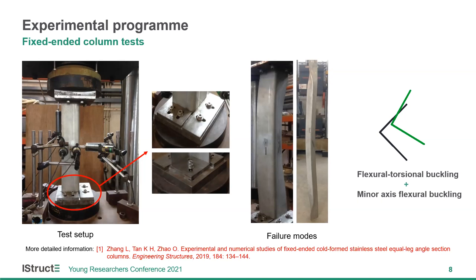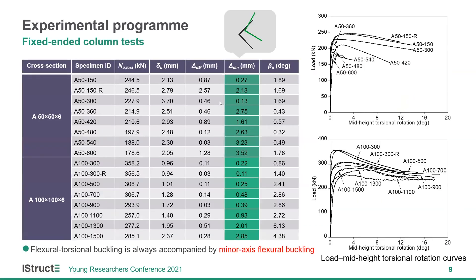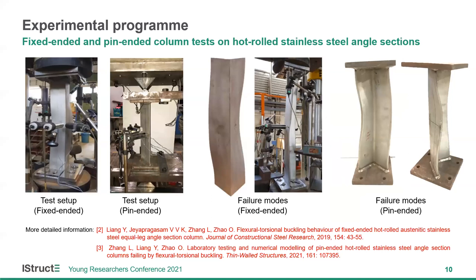This table reports the lateral deflections about the major axis and minor axis and the torsional rotation at the specimen mid-height when the failure load was reached, also demonstrating the interactive failure mode. We also conducted fixed-ended and pin-ended column tests on hot-rolled stainless steel angle sections, and we also found that major axis flexo-torsional buckling is always accompanied by minor axis flexural buckling.